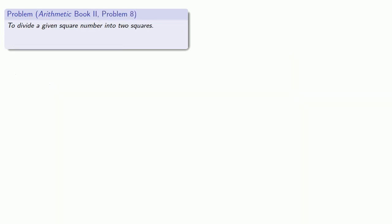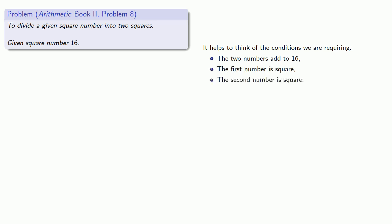Book 2 is where the Diophantine problems really begin, and probably the most important problem in Book 2 is Problem 8: to divide a given square number into two squares, given square number 16. It helps to think of the conditions we require. First, the two numbers add to 16. Second, the first number is square. And third, the second number is square.